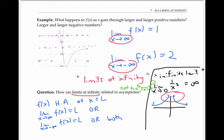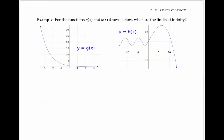Infinite limits, on the other hand, correspond to vertical asymptotes. Let's figure out the limits at infinity for these two functions, g of x and h of x. The first function, g of x, which is actually y equals e to the minus x, has a horizontal asymptote heading right at y equals zero. So therefore, the limit as x goes to infinity of g of x equals zero.